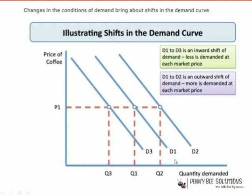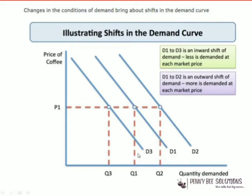If there is an increase in demand, the demand curve is likely to move from D1 to D2. If there is an inward shift — if the demand curve moves from D1 to D3 — it means demand has decreased, so less is demanded at each market price. An outward shift from D1 to D2 shows an increase in demand; an inward shift from D1 to D3 shows a decrease in demand.